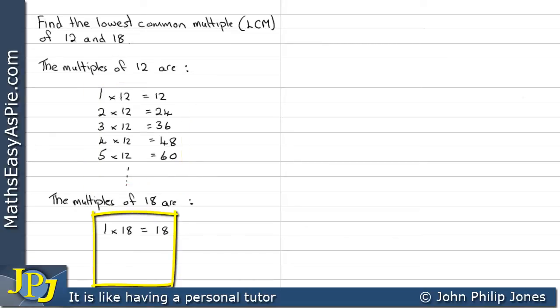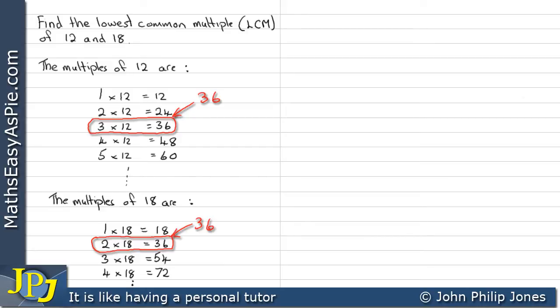We then look at the multiples of 18, and again we write out the times table here. We then look down the tables to see the first occasion that they give the same number, and it is when we can see they're both 36. So the lowest common multiple of 12 and 18 is 36.